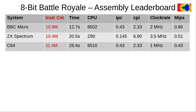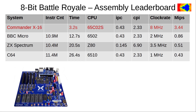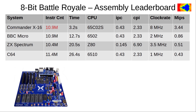Now Matt adds another contender, the recently released Commander X16. The X16 obliterates the classic micros with a result of only 3.2 seconds. Its processor, essentially a modern 6502, runs at 8 MHz and spits out a whopping 3.44 MIPS. By multiplying with 3.2 seconds, we again obtain around 11 million instructions in total, showing that Matt has ported his benchmark faithfully over to the X16.